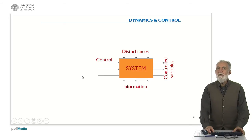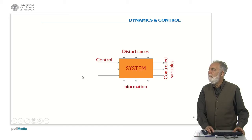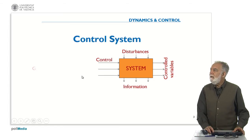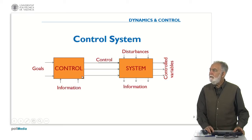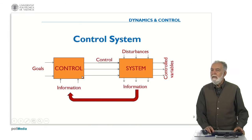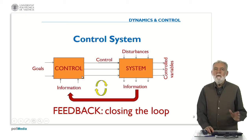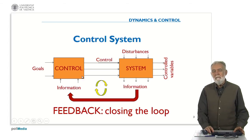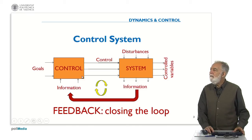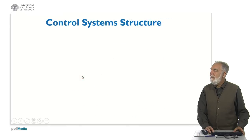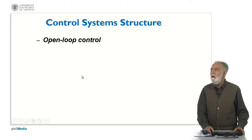We are dealing with dynamic systems that have many inputs. One of them — or a set of them — is the control. We want to generate a control subsystem such that these control signals are generated automatically. To generate the control, we need some goals and some information, which can be obtained through the system, closing the loop by feedback. But this is only one of the options. The objective of today's session is to discuss the different structures we can find in controlling a system. The main options include: open loop control, closed loop control, supervisory control, cascade control, feedforward control, two degrees of freedom control, and hierarchical control.